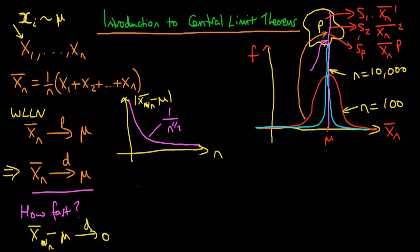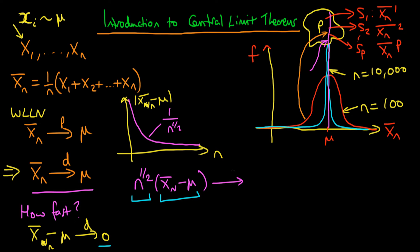A question we might be interested in is: what happens if I multiply x̄ₙ − μ by the factor n^(1/2)? The reason we ask this is because we know that x̄ₙ − μ converges in distribution to zero — as n gets really big, this term gets really small and converges to zero. But this factor of n^(1/2), as n gets bigger, goes to infinity. What happens to the limiting distribution of this product?